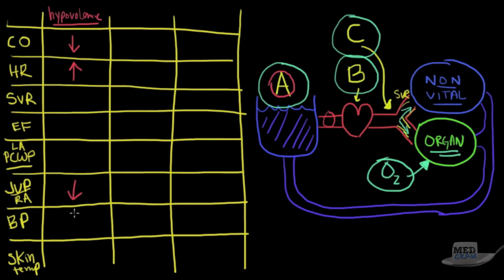With low circulating volume, both right and left atrial pressures are low, so JVP and pulmonary capillary wedge pressure are both low. Because SVR is increasing and blood is being shunted toward vital organs, non-vital organs like skin receive less flow. Therefore skin temperature is cool. That's the picture of hypovolemic shock.